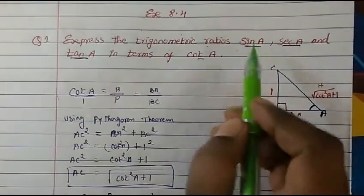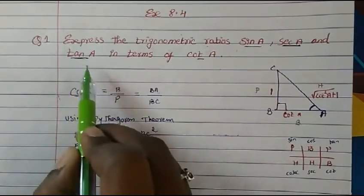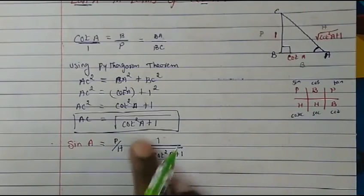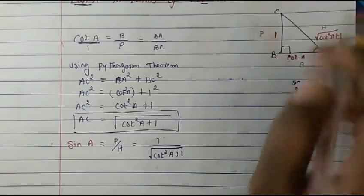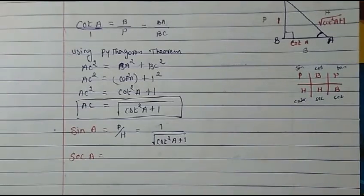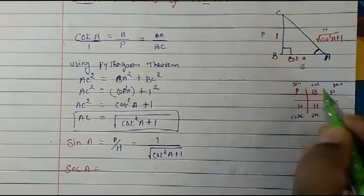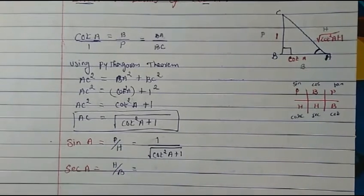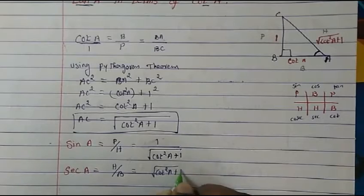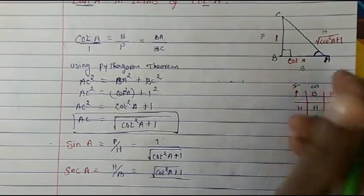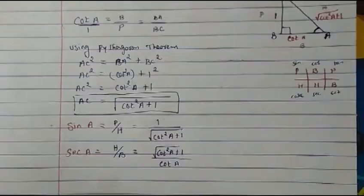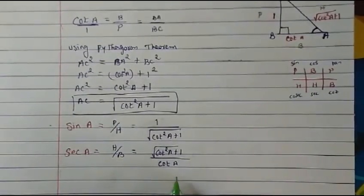Now for sec A. Sec A is hypotenuse upon base. Hypotenuse is root(cot squared A plus 1) and base is cot A. So sec A equals root(cot squared A + 1) over cot A. Sec is also now expressed in terms of cot.